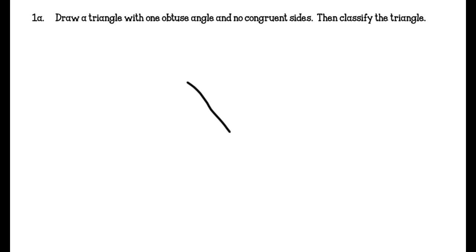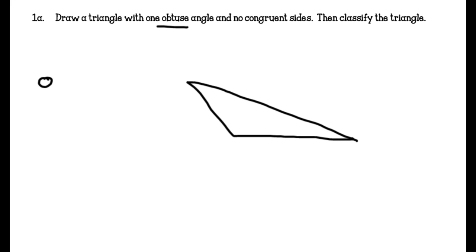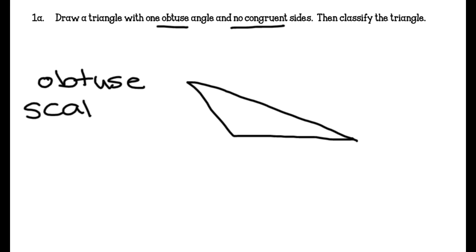1A: Draw a triangle with one obtuse angle and no congruent sides. So we have one obtuse angle and no congruent sides. Because it has one obtuse angle, we know it's an obtuse triangle — that's classifying it by angles. And classifying it by sides, it has no congruent sides, which is scalene. So this is an obtuse scalene triangle.